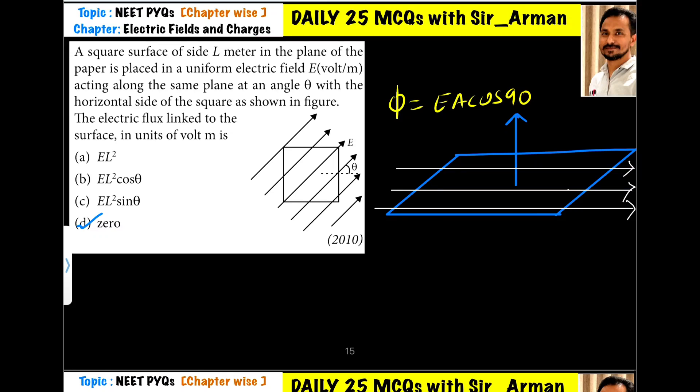A square surface of side L meter in the plane of the paper is placed in a uniform electric field acting along the same plane. Here, what is given? The electric field is acting along the plane.